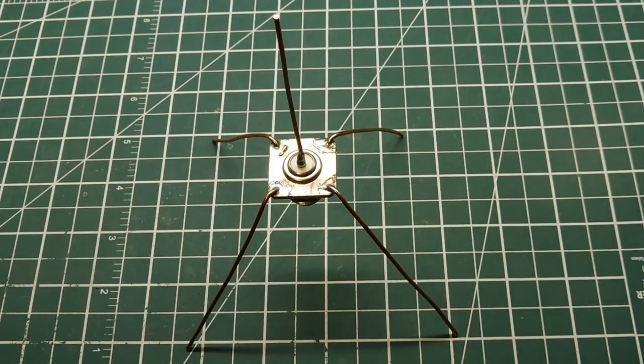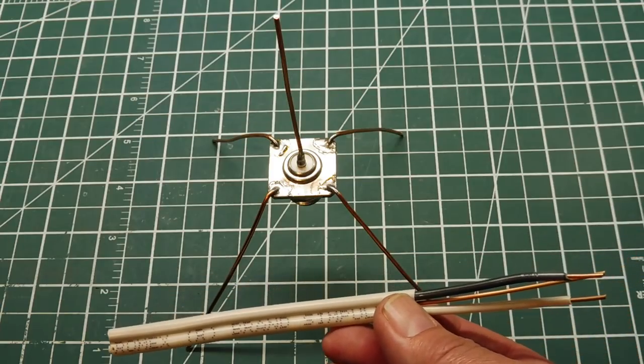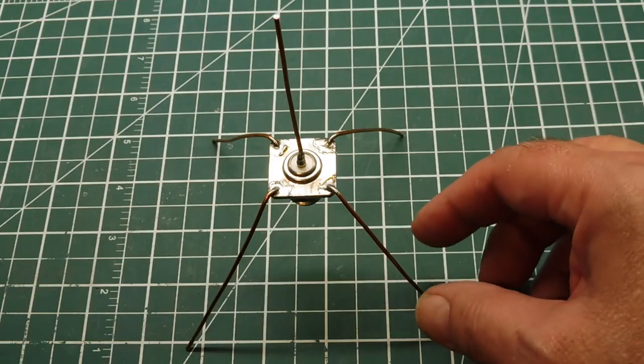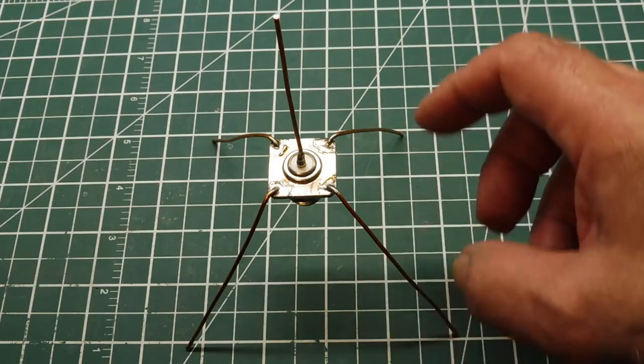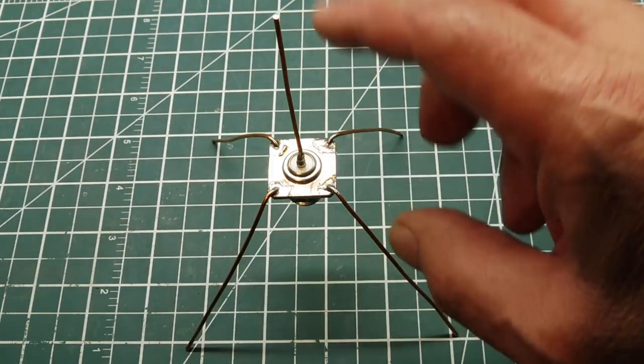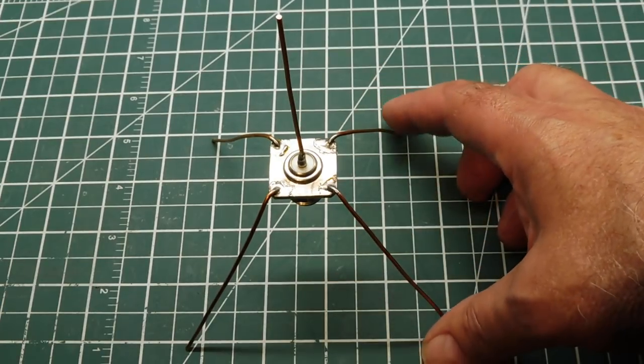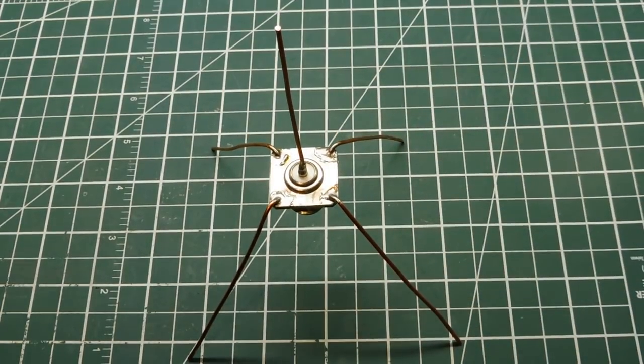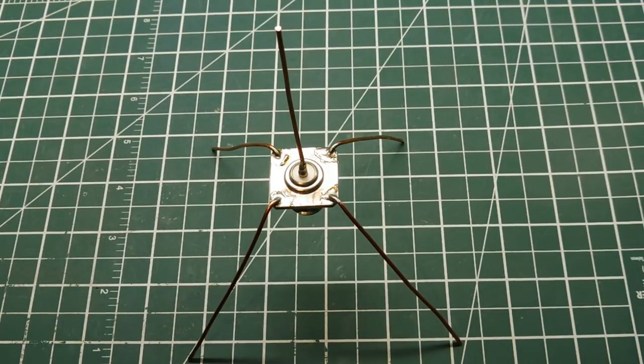So all we need to get is some Romex electrical wire, like this here, and strip out the copper. And we cut 4 radials, quarter wavelength long, and 1 radiator quarter wavelength long, so the 5 pieces of wire will be the same length. And then we solder them into the connector, and we have ourself a quarter wave monopole ground plane antenna.